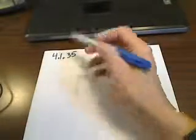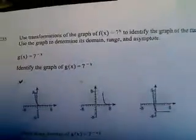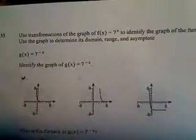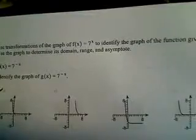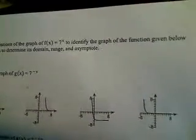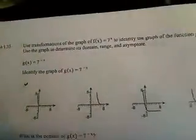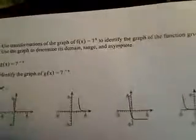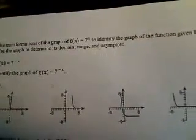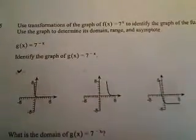4.1.35, and here is the problem. They ask us to use transformations of the graph of f(x) = 7^x to identify the graph of the function given below. And then they want us to use the graph to determine its domain, range, and asymptote. So they're wanting us to graph g(x) = 7^(-x).